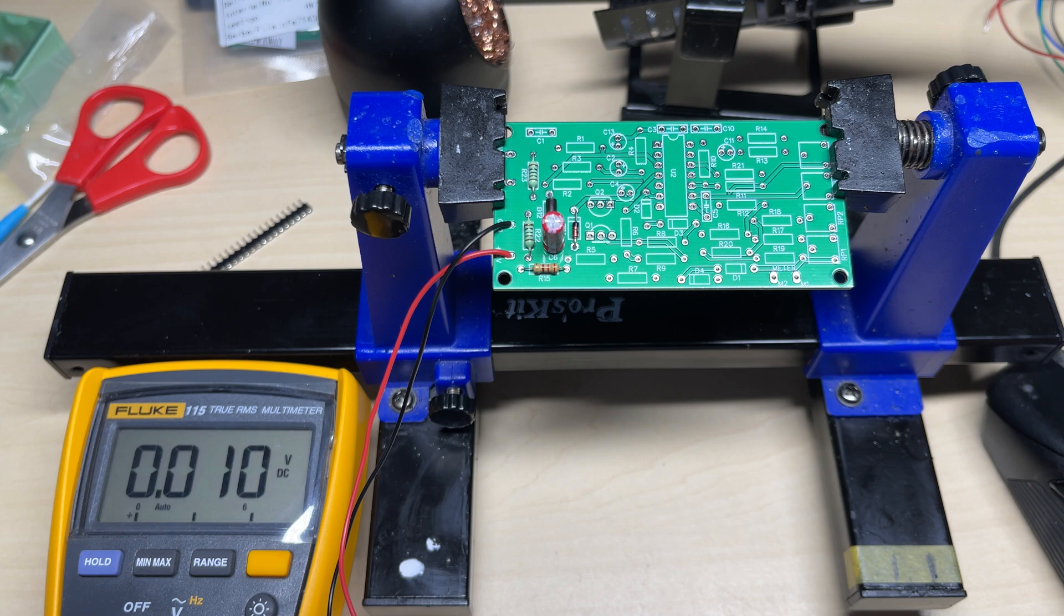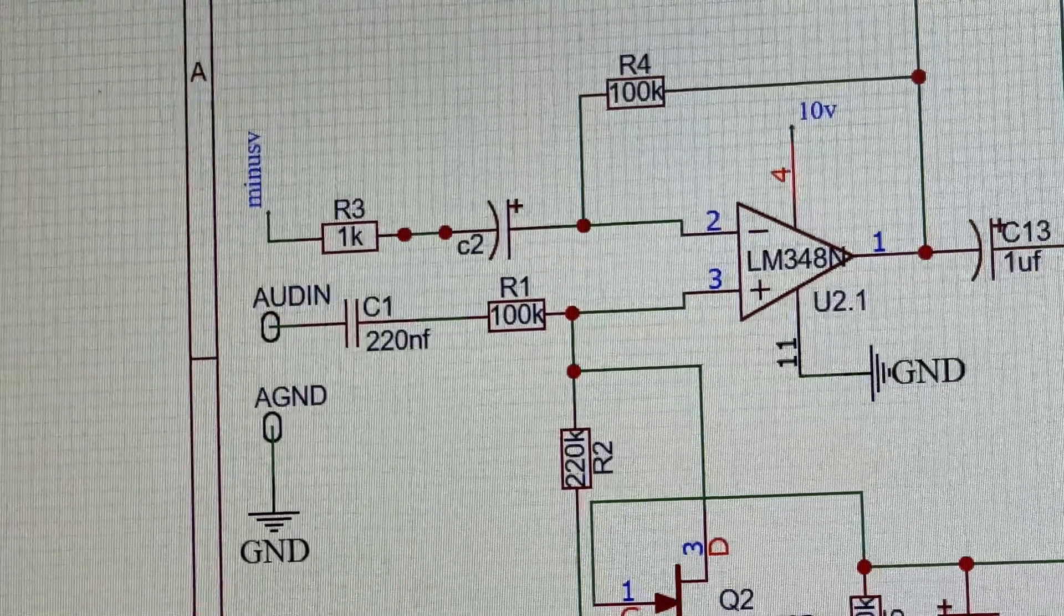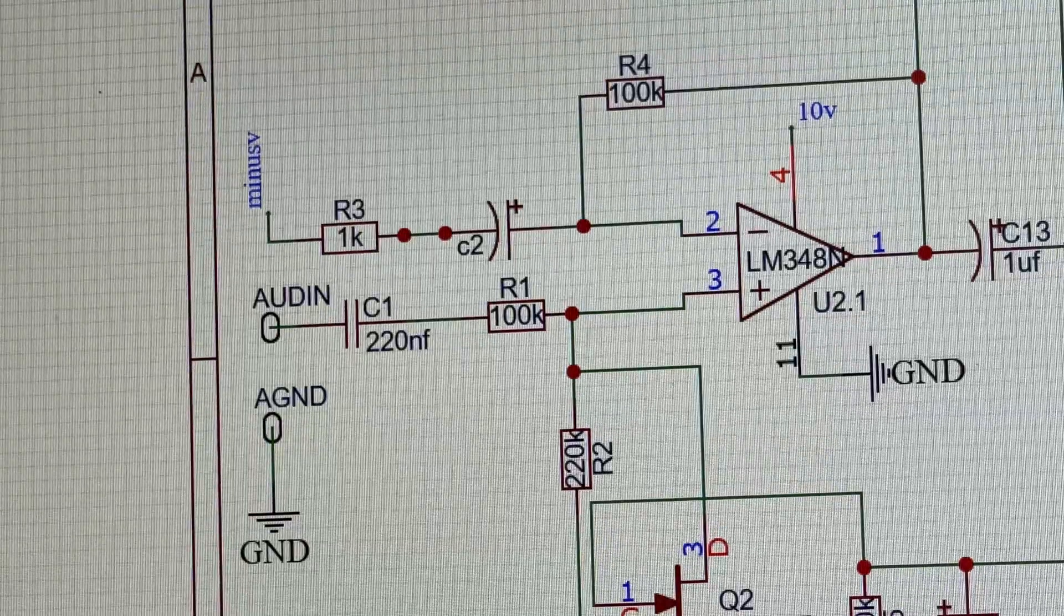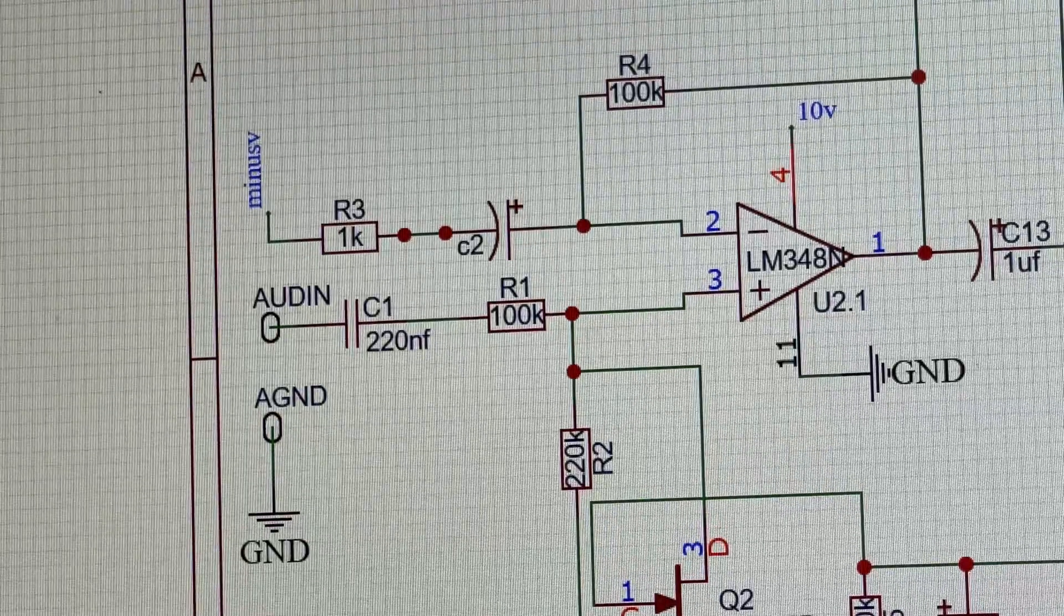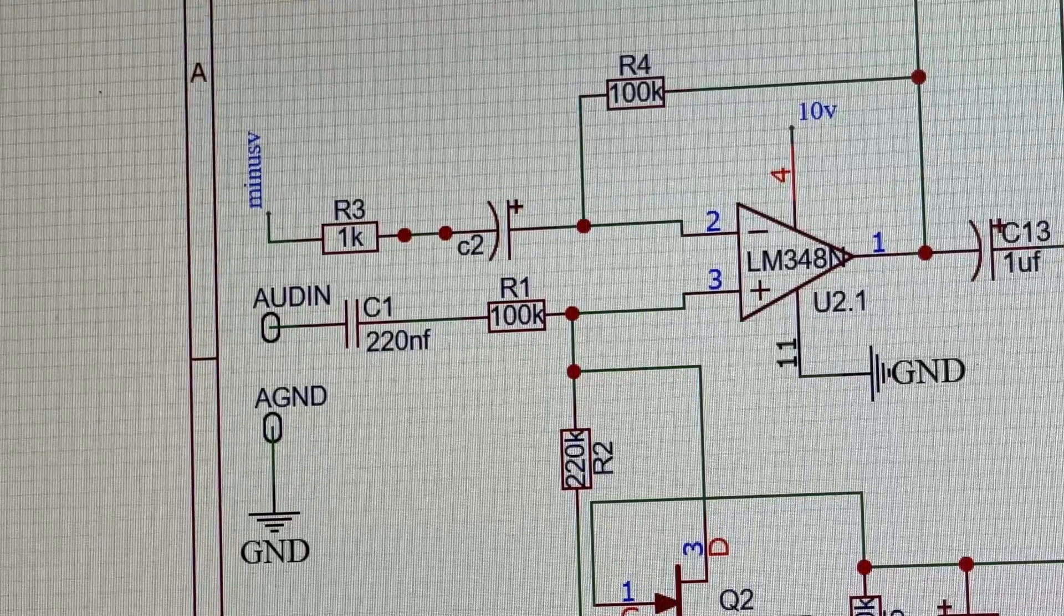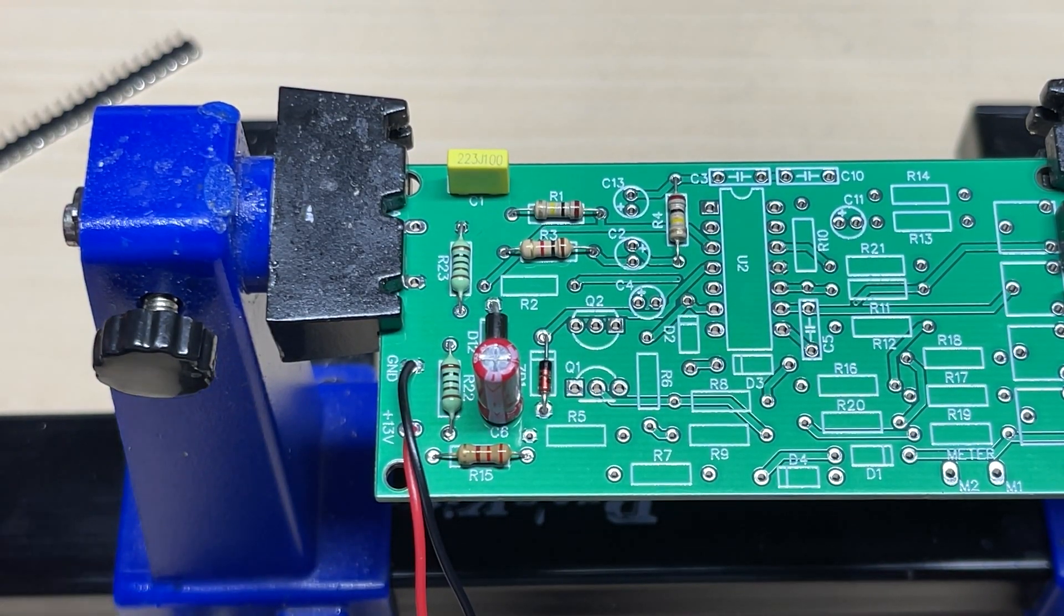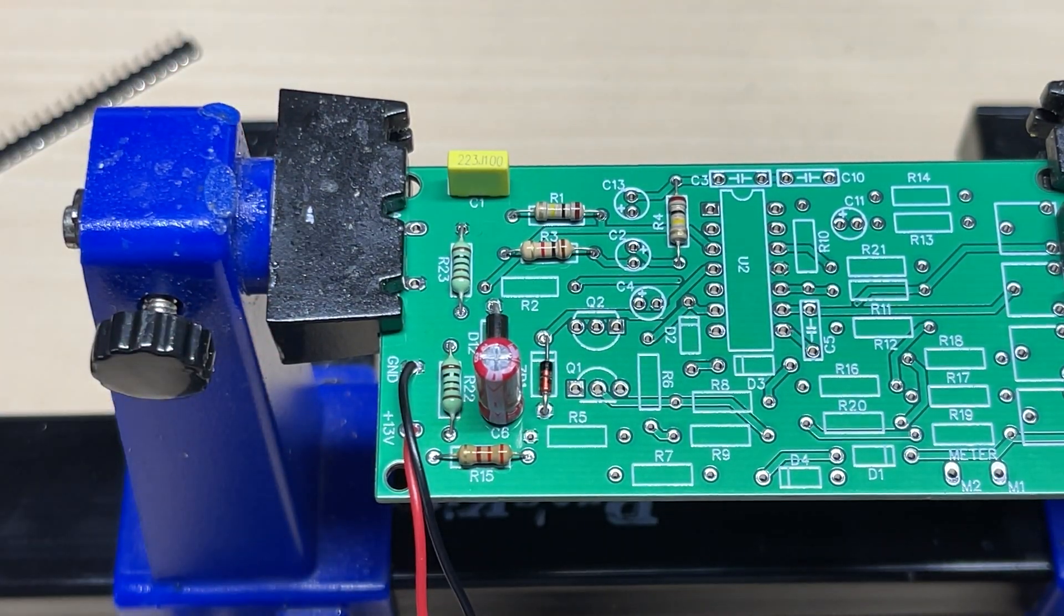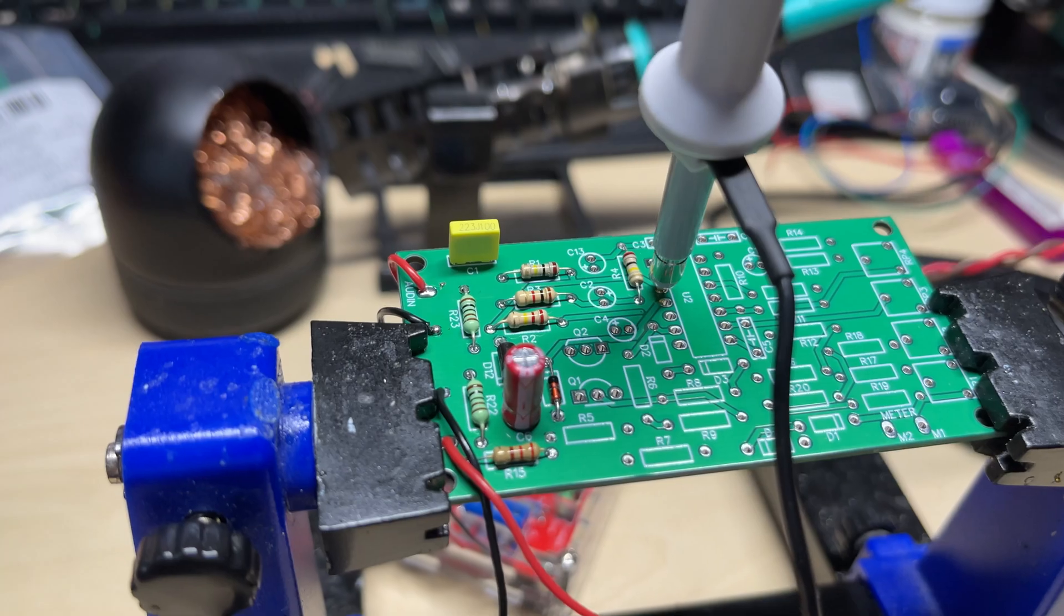So I'm going to build this bit by bit, because I don't know if this circuit actually works, so if we build it bit by bit we can actually trace our steps. First part, let's get the first part of this op amp soldered in and actually test whether the input works.